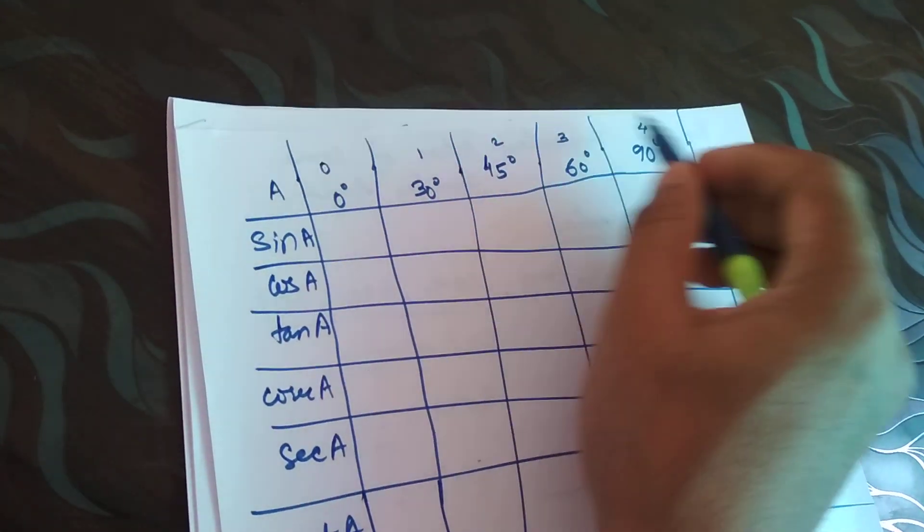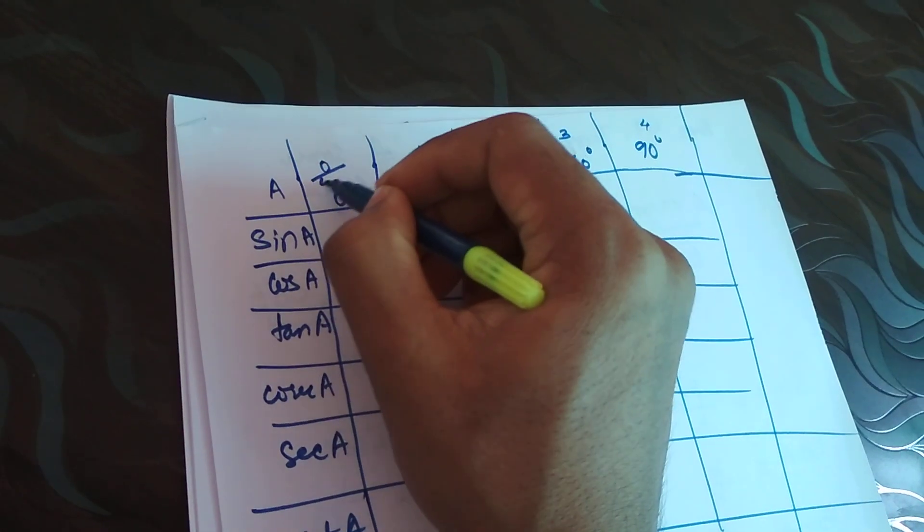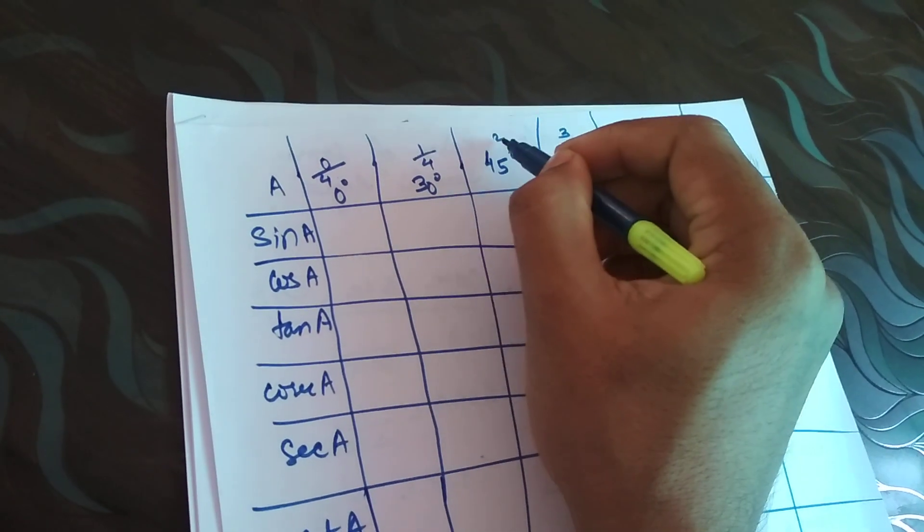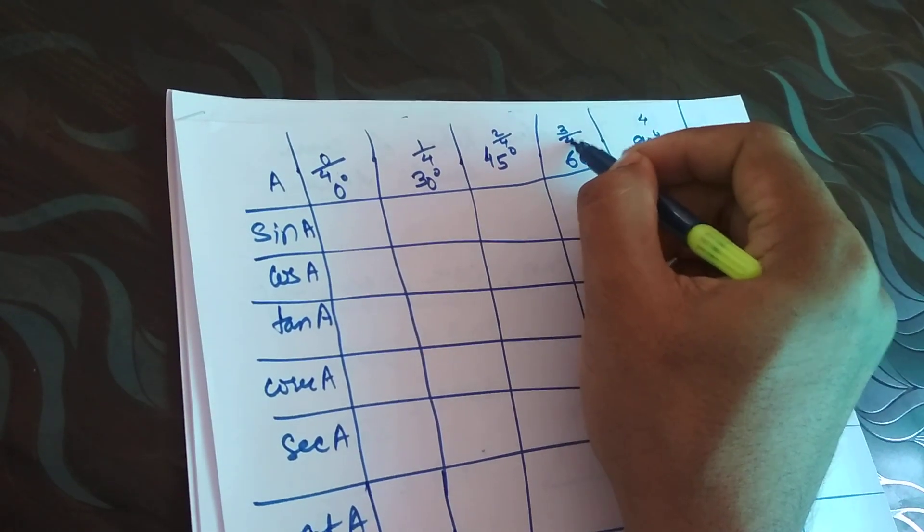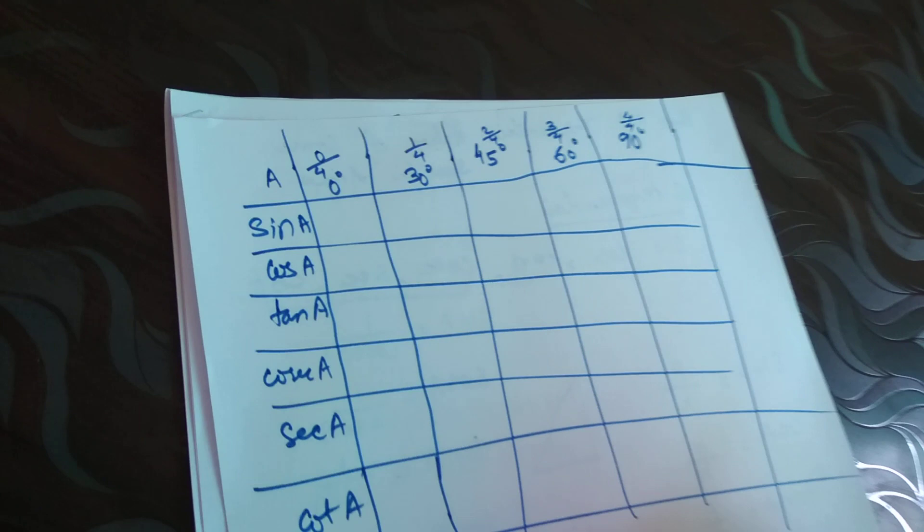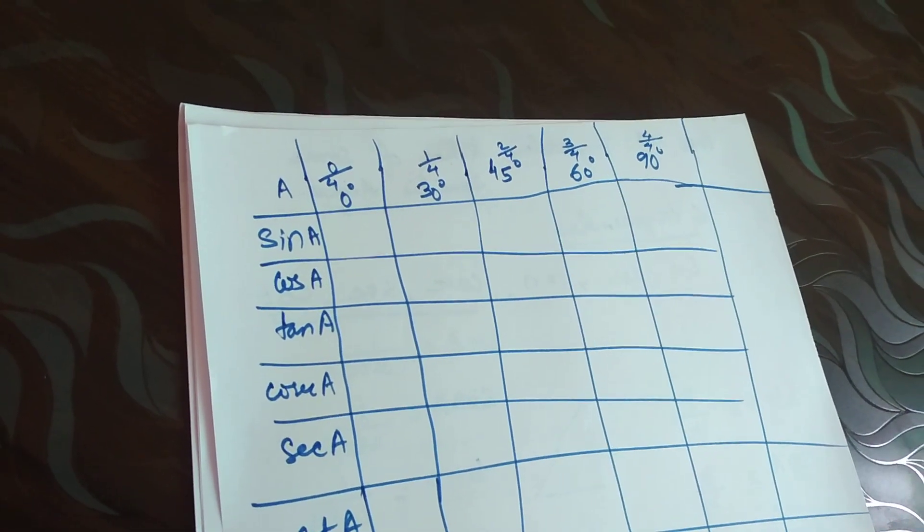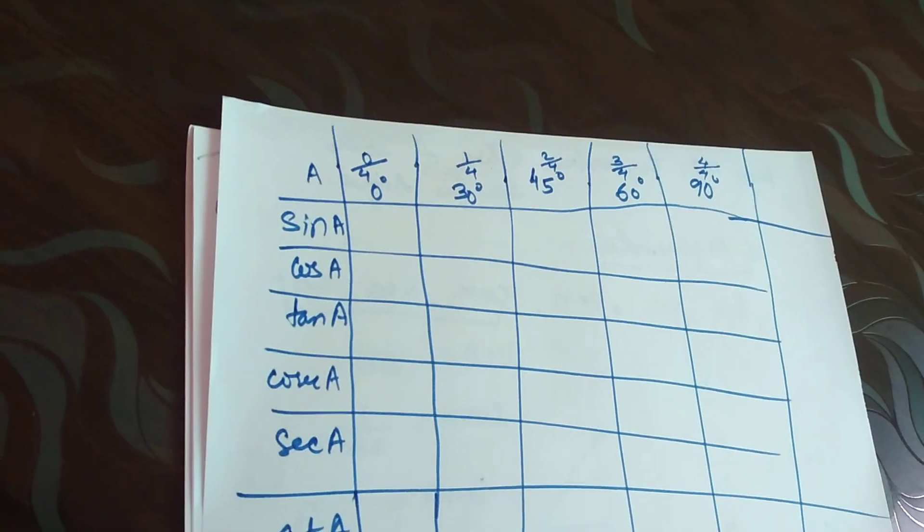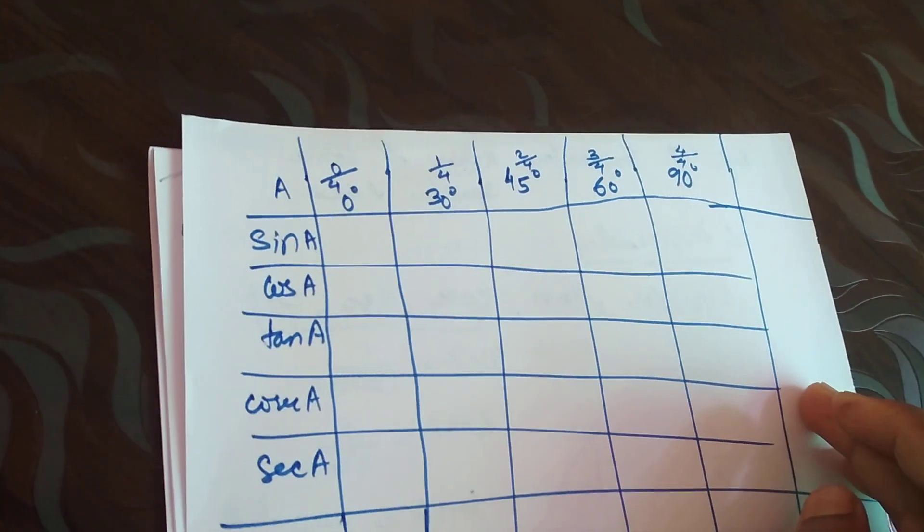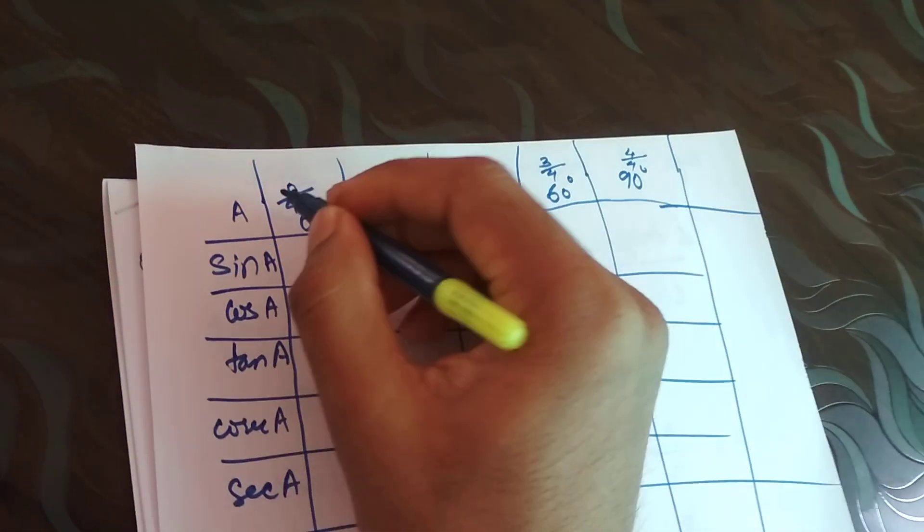Since this is 0, I will consider it only 1, 2, 3, 4. There are 4 numbers, so divide by 4. Divide by 4, divide by 4, divide by 4. So this is how you divide by 4.